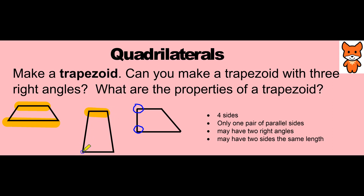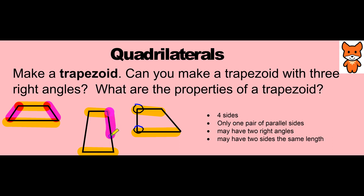But this line is parallel with this line. On my final trapezoid, this pair of sides are not parallel, but this side is parallel with this side. A quadrilateral may have two right angles, and a quadrilateral may have two sides that are the same length. This pair of sides are not the same length, but this side is the same length as this side. The parallel sides on this trapezoid are not the same length, but this side and this side are the same length. These are the properties of trapezoids.